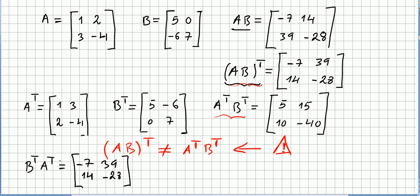So let us check, instead of A transpose times B transpose, let us see what is B transpose times A transpose. So B transpose times A transpose is -7, 39, 14, -28.